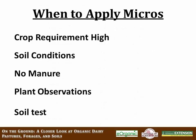In conclusion, it's important to think carefully about when to apply micronutrients. First, understand the crop's requirements and whether it needs any specific micronutrients in high amounts. Look at soil conditions and pH, since both high and low pH can trigger micronutrient deficiencies. Consider whether manure has been added to the soil and what level of micronutrients the manure contains. Use plant observations and soil tests together — these are all pieces of information to determine if micronutrients should be added to a field or crop.